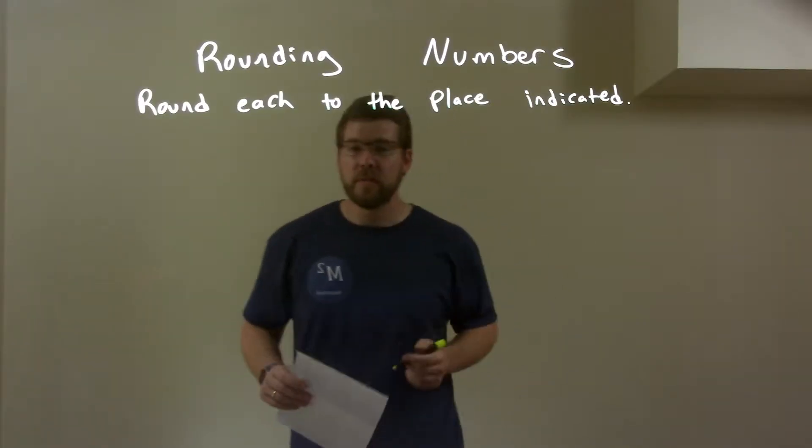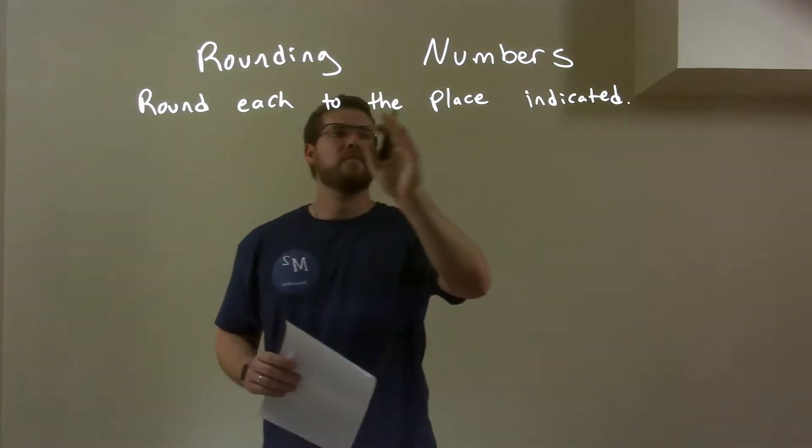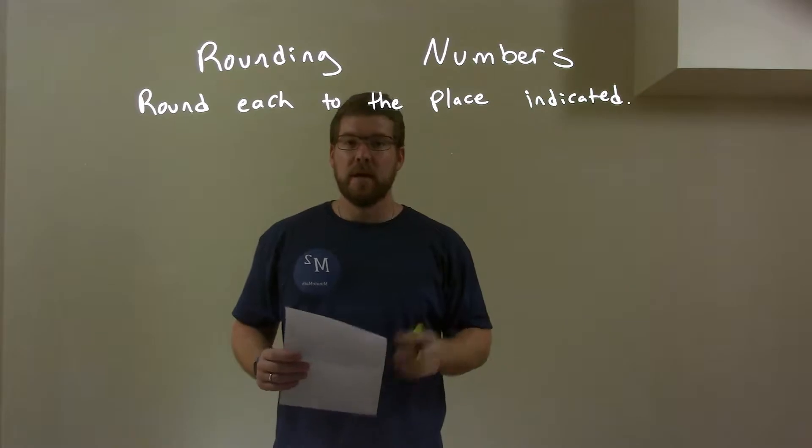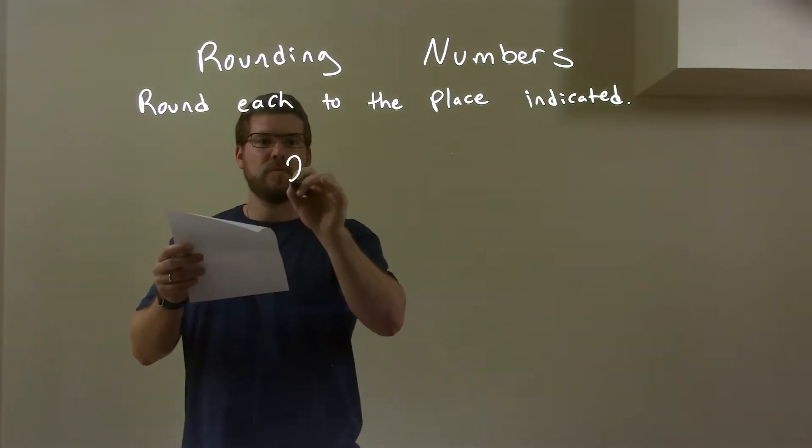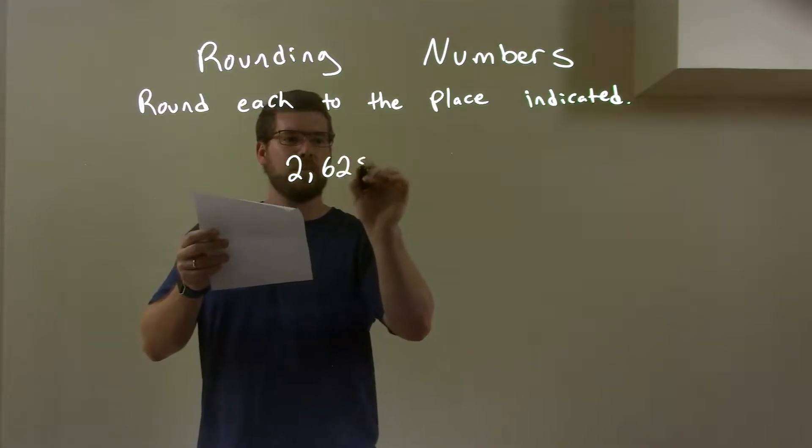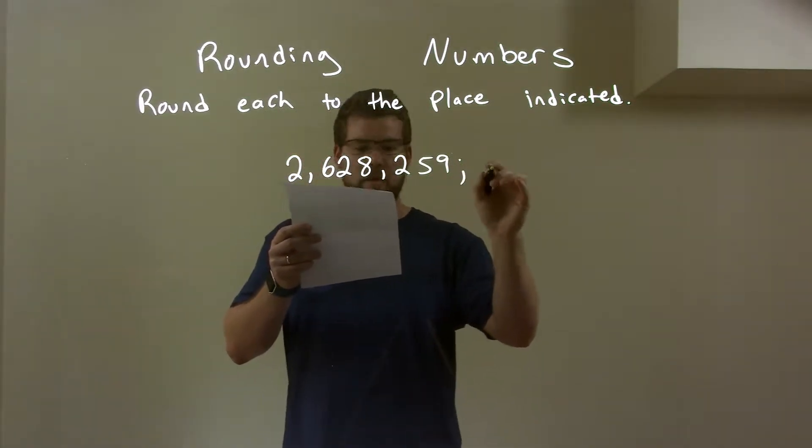Hi, I'm Sean Gannon, and this is MinuteMath, and today we're learning about rounding numbers. We round each to the place indicated. So, if I was given this number, 2,6,2,8,2,5,9, we're rounding in the thousands.